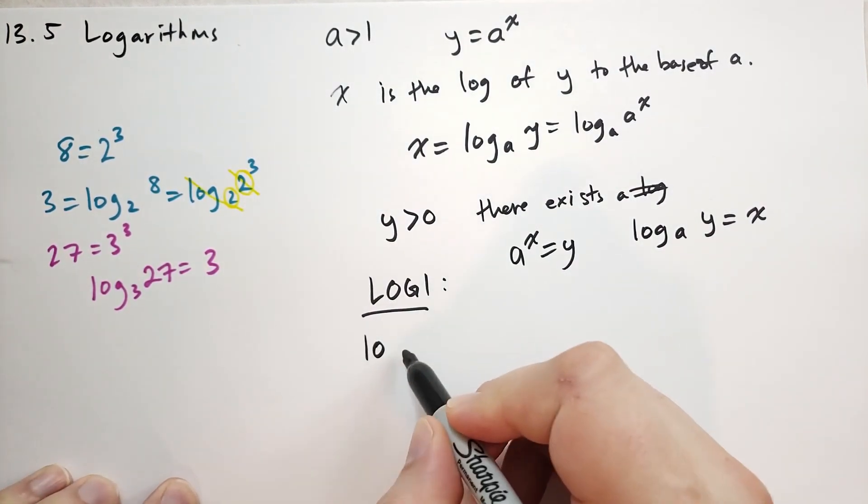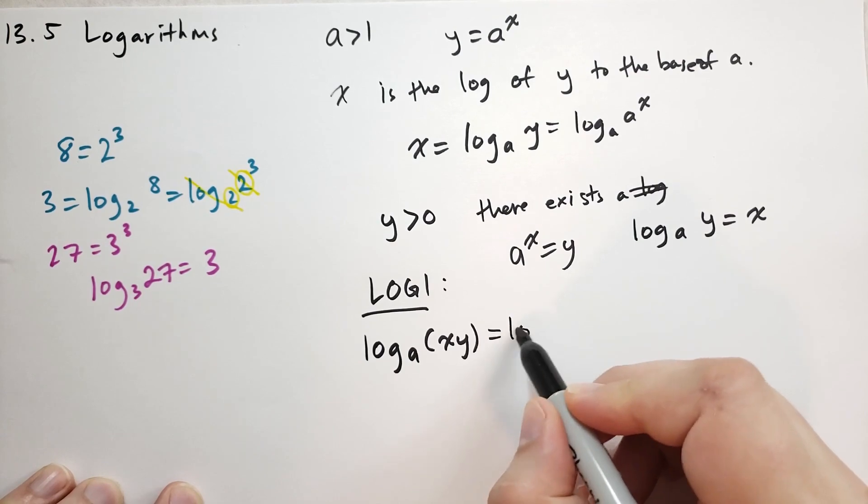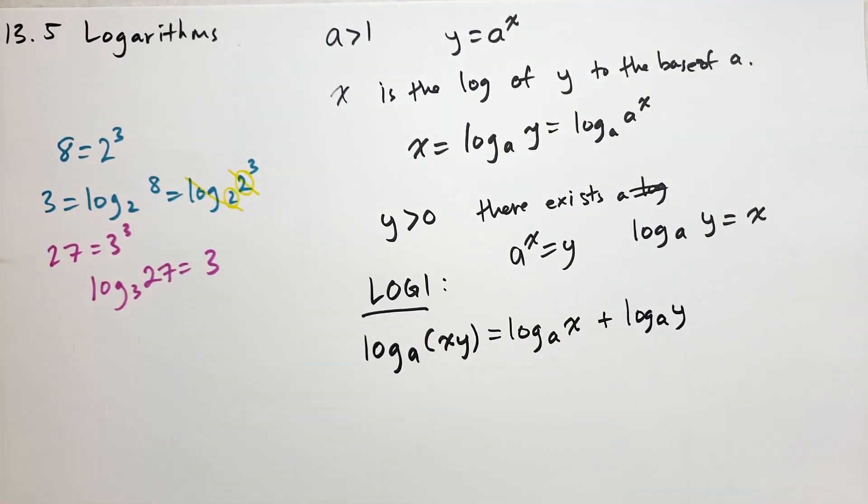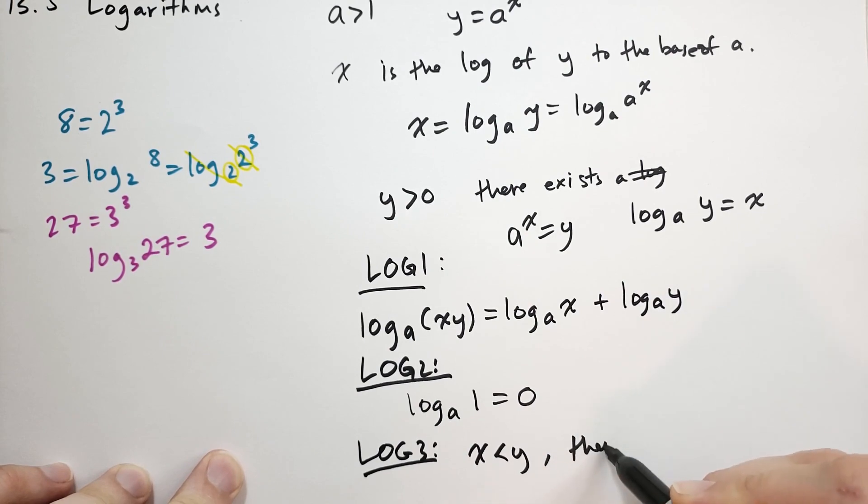Let's get into some rules for logs. Log rule number 1 says if we have log base a, any base, of x times y, that is going to be the same as log base a of x plus log base a of y. Log rule 2 says that log base a of 1 is equal to 0. That should be fairly evident why that is. And log rule 3 says if x is less than y, then log base a of x is less than log base a of y. So logs get smaller as the thing you are taking the log of gets smaller.